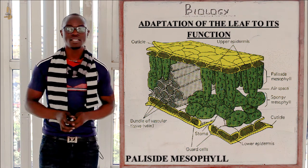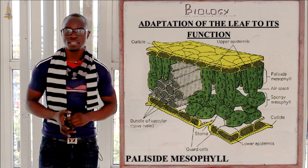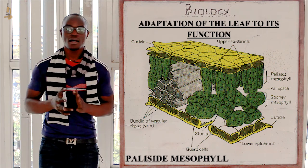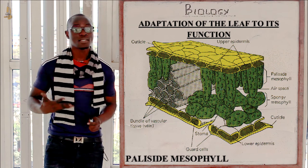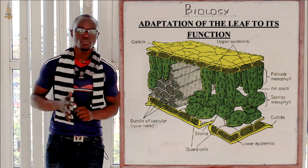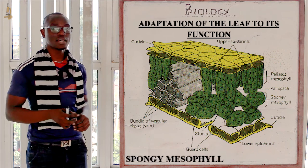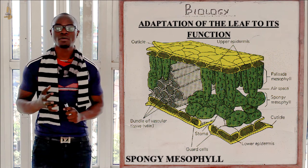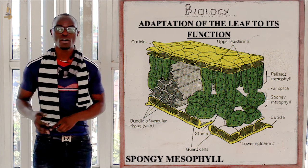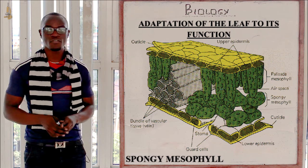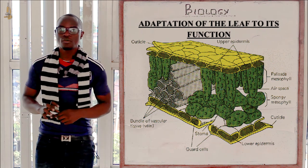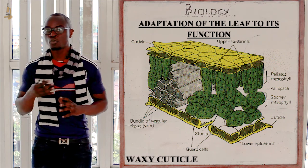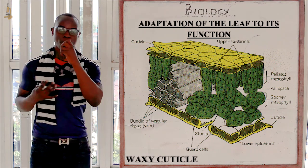The palisade cells have maximum chloroplast in them for maximum manufacture of food, since chloroplasts manufacture the plant food. The spongy mesophyll has very large air spaces for the maximum trapping of carbon dioxide and other gases responsible for photosynthesis. The cuticle is also waxy and waterproof so as to prevent excess water loss by the plant.